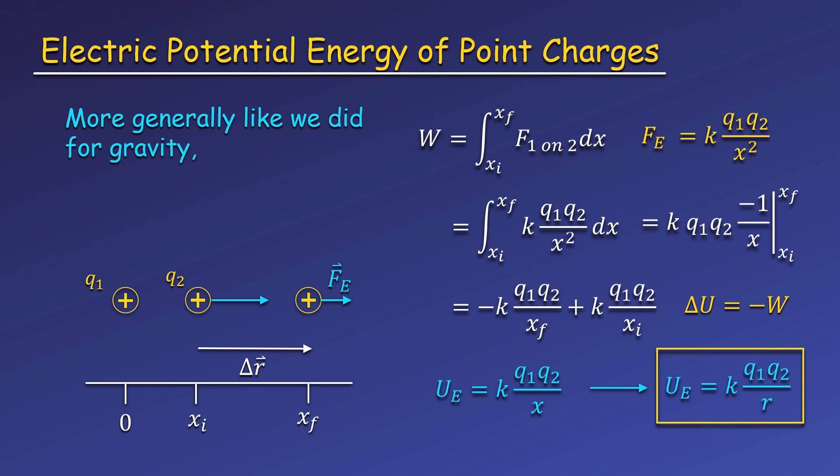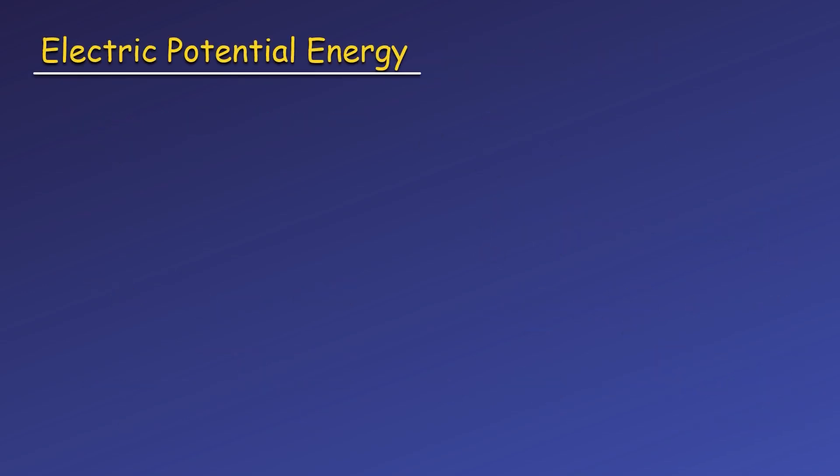This looks very similar to gravitational potential energy between two masses, just like Coulomb's law looks similar to Newton's law of gravitation. There are some important things to note about electric potential energy. Like the gravitational potential energy between two masses, this potential energy is defined to be zero when the charges are infinitely far apart. Otherwise, if R is not zero, there is technically some small amount of force, and thus some small amount of potential energy of the interacting charges.